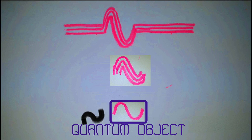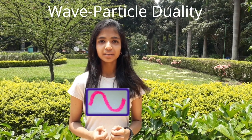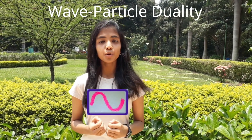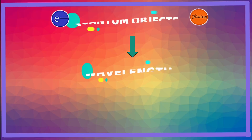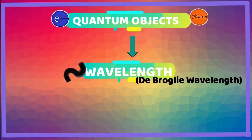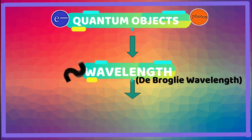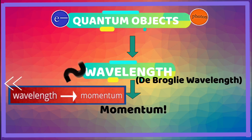That's why the wave-particle duality of matter tells us that a quantum entity behaves as both waves and particles. This means all quantum objects have wavelength, and hence they have momentum.